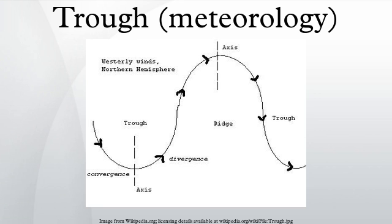Convective cells may develop in the vicinity of troughs and give birth to a tropical cyclone. Some tropical or subtropical regions such as the Philippines or South China are greatly affected by convection cells along a trough.